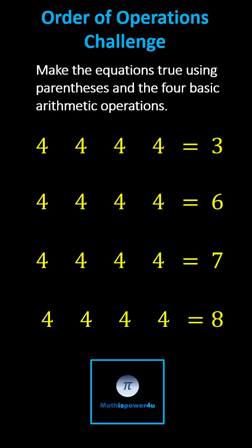Since 16 minus 4 equals 12, let's begin with 4 times 4, which is 16. Put this in parentheses and then minus 4. This quantity gives us 12. Put this in parentheses, and then we divide by 4, which gives us 3. Again, we have 12 divided by 4 equals 3.